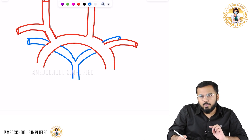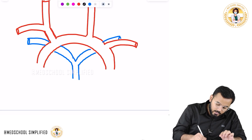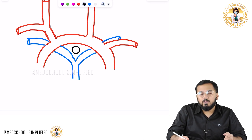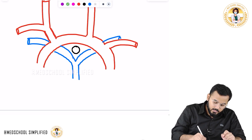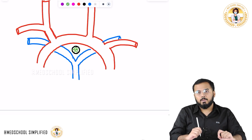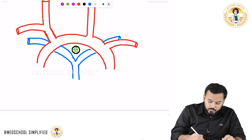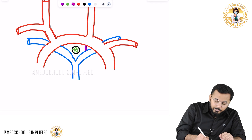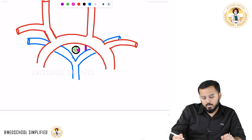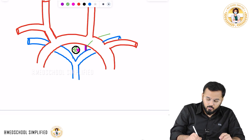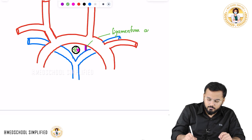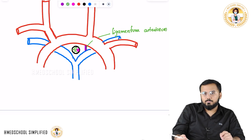Exactly above the bifurcation of the pulmonary artery, you have the cardiac plexus — and this cardiac plexus here is called the superficial cardiac plexus. Within the superficial cardiac plexus, there is a ligament attached from the aorta to the pulmonary artery called the ligamentum arteriosum. Exactly facing the ligamentum arteriosum, there is a ganglia called the cardiac ganglia, which is located within the cardiac plexus, adjacent to the ligamentum arteriosum.